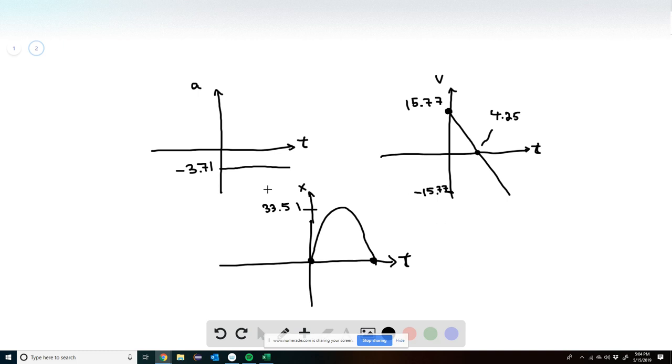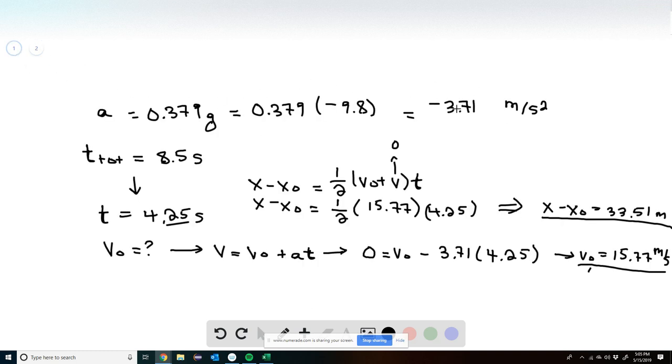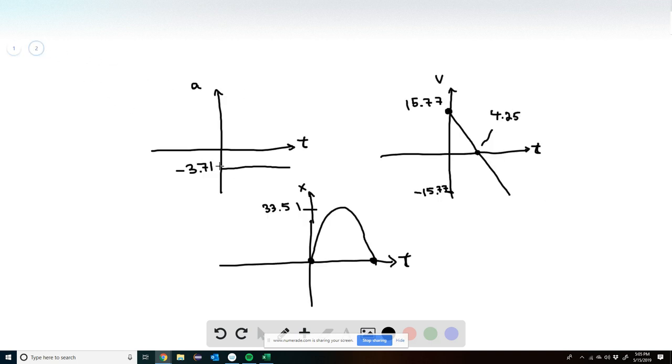I think it's easiest to start with a graph of A versus T. Since we calculated at the very beginning that A is negative 3.71 and it's not dependent on time, that means the graph is just a horizontal line at negative 3.71.